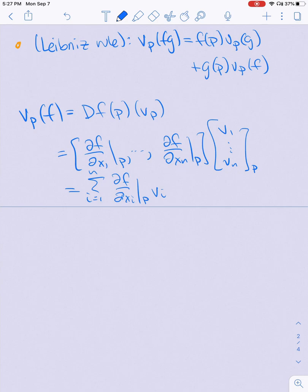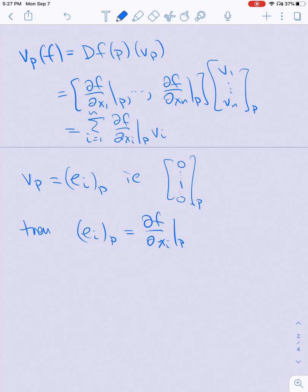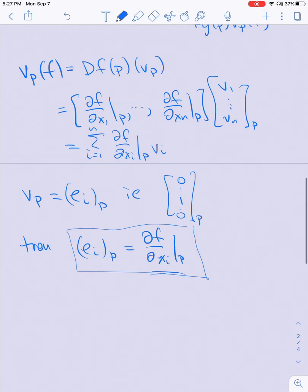If v_p is equal to e_i at p—that is, the vector that's all zeros except a one in the i-th position—then e_i at p is just equal to df/dx_i at p. This is the simplest kind of directional differentiation I can think of to apply to a function, just applying the partial derivative with respect to one of the variables. Now I want to prove my Leibniz rule.